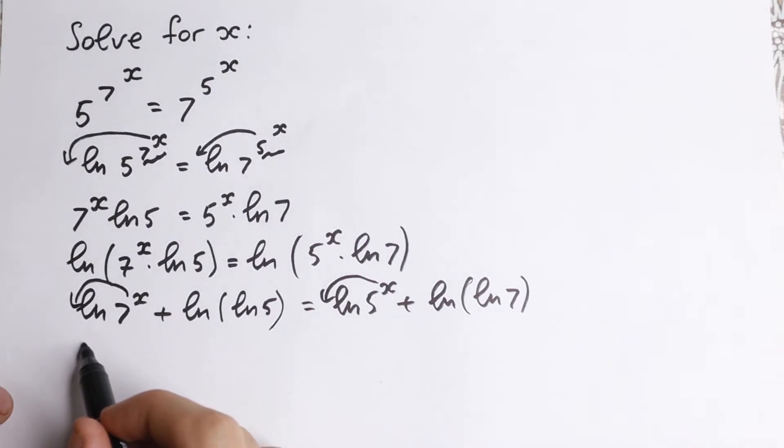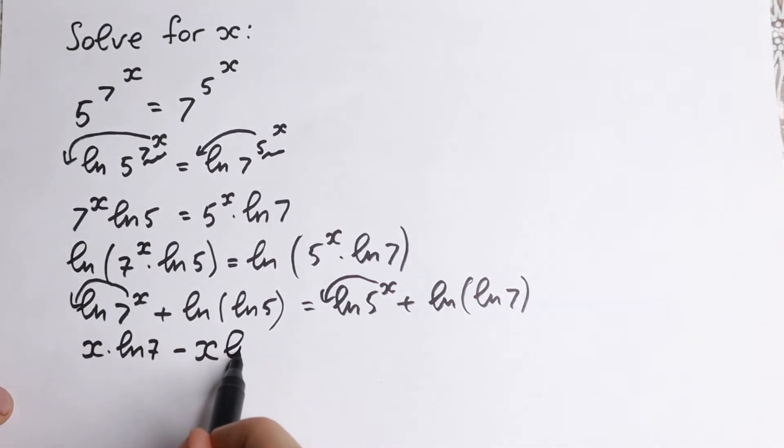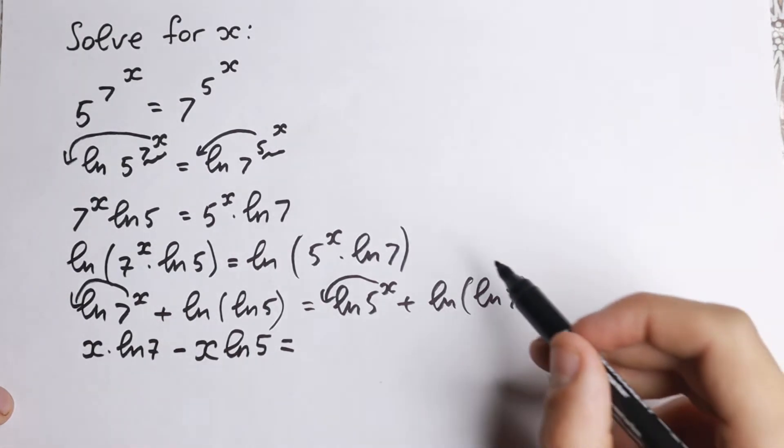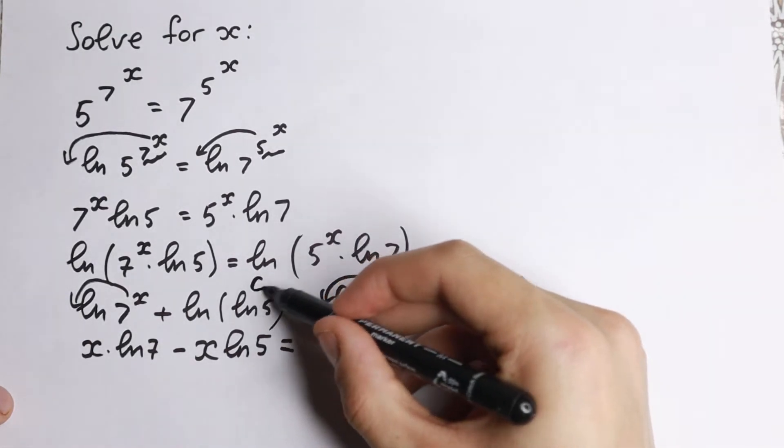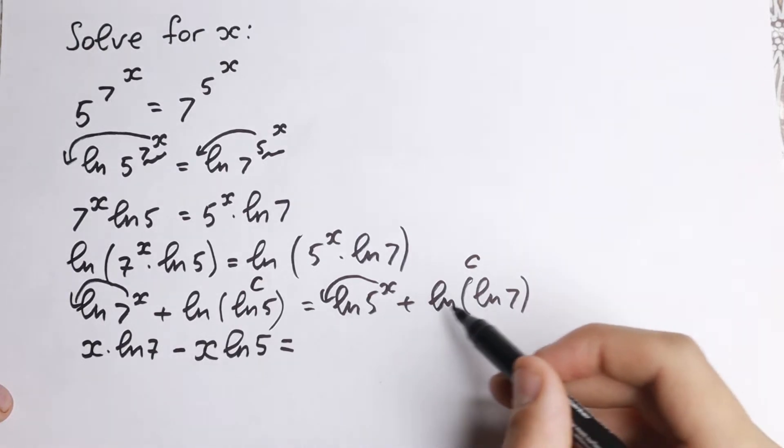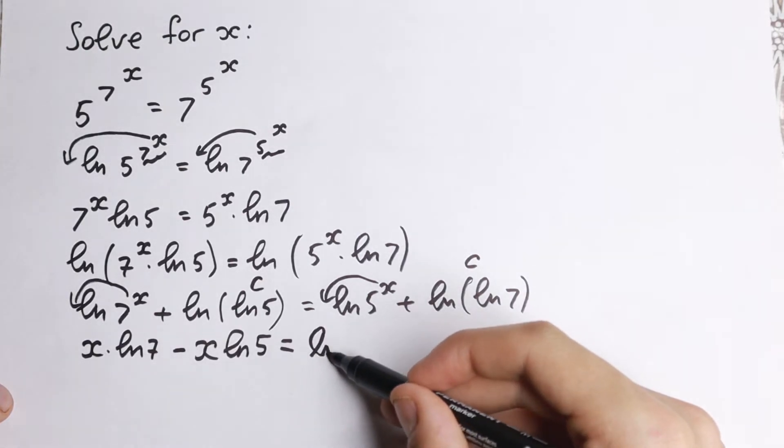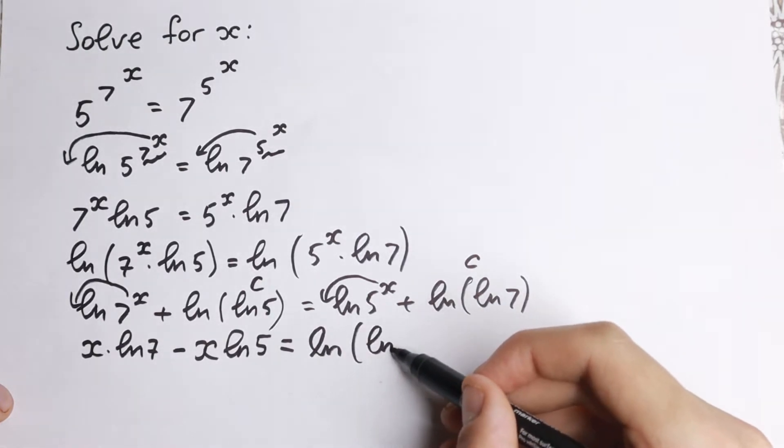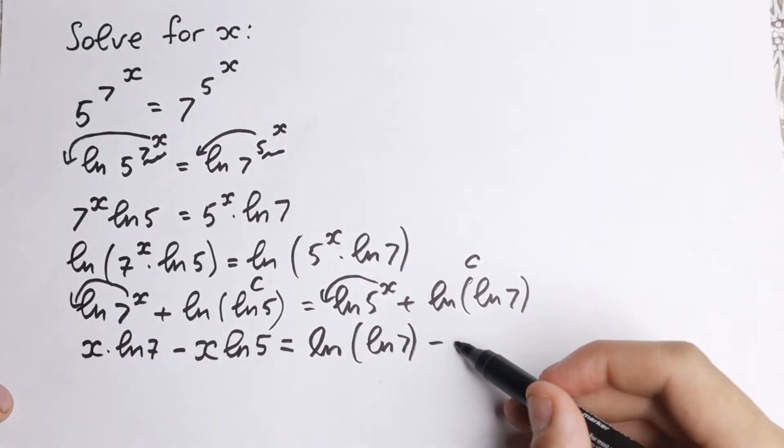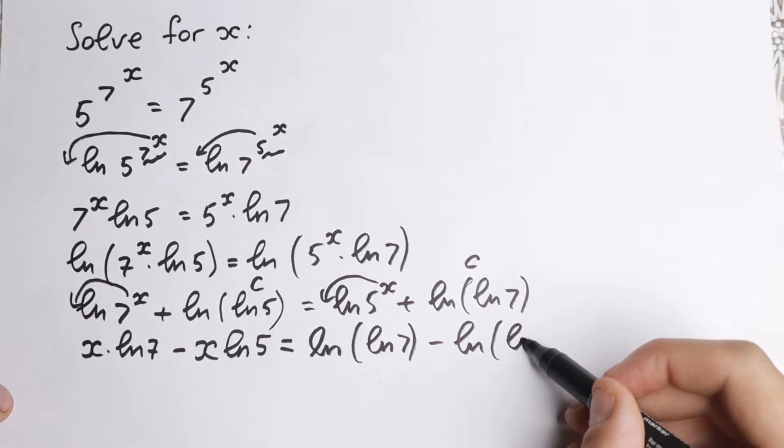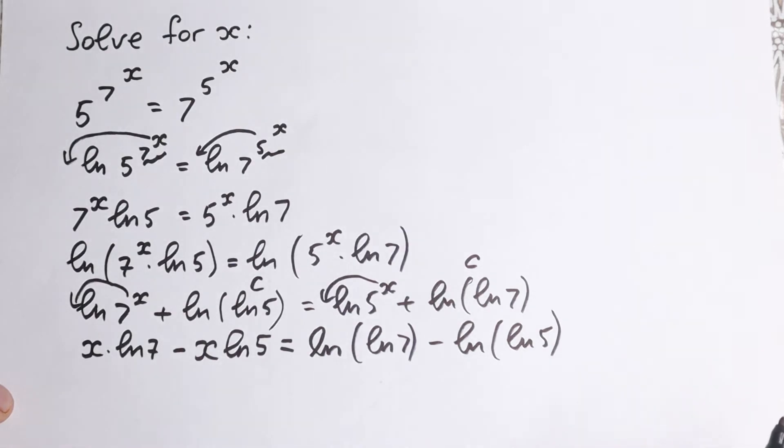So as a result, x times natural log 7. And I want to bring this one on the left-hand side. So minus x times natural log 5. This is on the left-hand side. And I want to bring this one, because this is a constant and this is a constant. So we have natural log of natural log 7 minus natural log of natural log 5. I hope you understand this step right now.